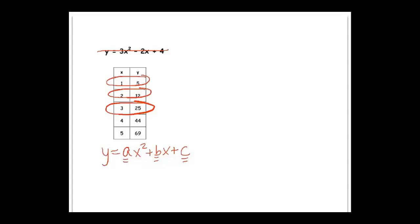Again, I'm putting 5 in for y, and 1 in for the x's. So 5 equals a times 1 squared plus b times 1 plus c. I'm going to do the same thing with 2 and 12. So 12 equals a times 2 squared plus b times 2 plus c.